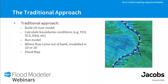Before looking at direct rainfall modelling, it's worth examining the traditional approach. When you've got a single source of flood risk — typically a river — you take topographic survey, cross sections of the channel and floodplain, and build a 1D model. You generate flow or tidal boundaries, attach them to your model, and wherever channel capacity is exceeded you get out-of-bank flooding, modelled in 1D or 2D. This works great for a single source of risk but less so for distributed or multiple sources.